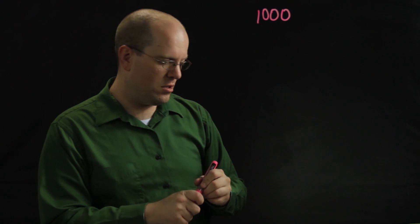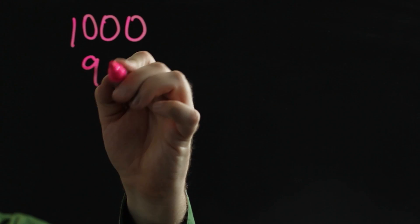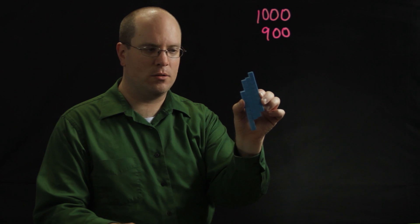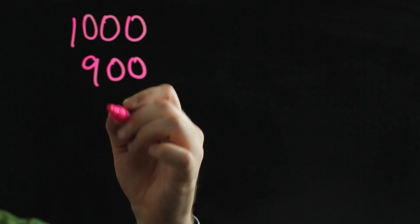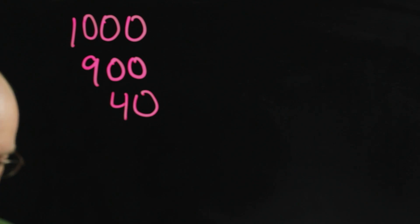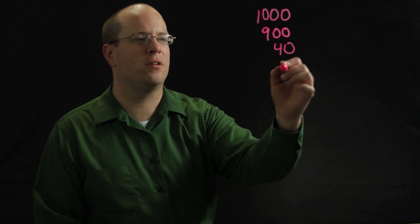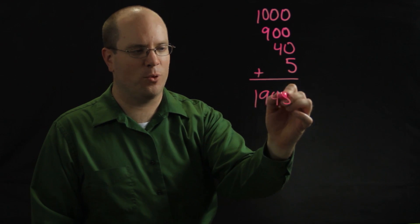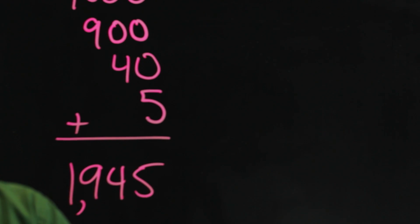How many of these? With my class we usually have one of these, so we say we have 1,000. Then after all the grouping we usually have nine of these, so that's nine hundreds. Then we'll have maybe four of these, so that's four tens or forty. We'll usually have about five of the individual cubes left, so we'll figure out that we have about 1,945 cubes, depending on how many got lost in the previous year.